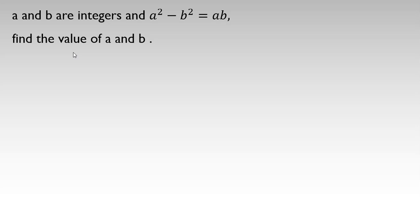a and b are integers, and a squared minus b squared equals ab. Find the values of a and b. This problem has many ways to solve it — you can use GCD or other things — but I want to tell you a basic solution that is useful for all students. One way is to take all things to one side. The main equation is a squared minus b squared equals ab.